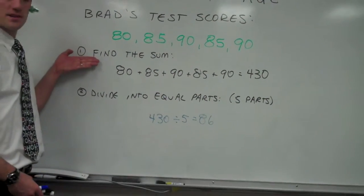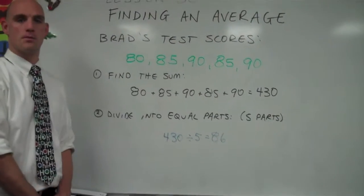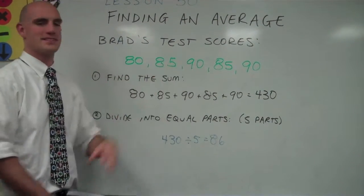So finding the average is finding the sum and dividing it into equal parts as determined by the number of things that you added together.